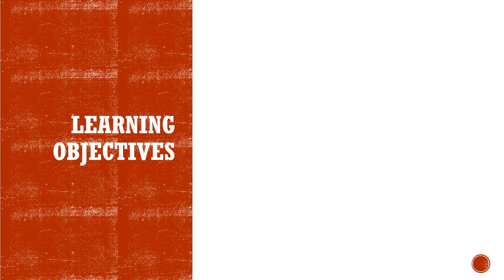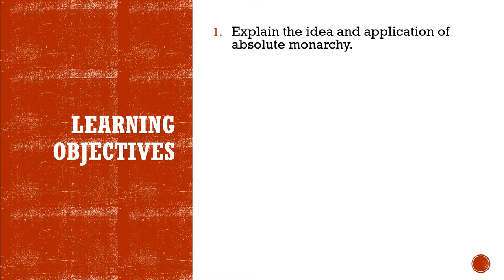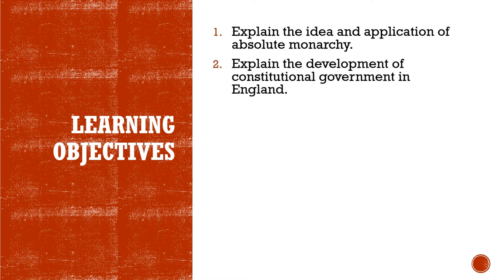The learning outcomes for this unit: number one, explain the idea and application of absolute monarchy — these are powerful kings that emerged during the early modern period, truly at the top of a pyramid, unlike the weak kings of the Middle Ages who had to rely on powerful noble families. Number two, explain the development of constitutional government in England. England will go a very different path from France — kings become super powerful in France, whereas in England they don't.